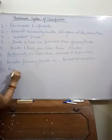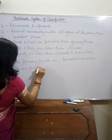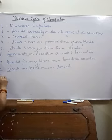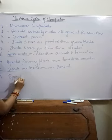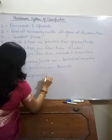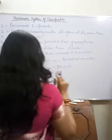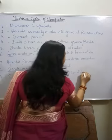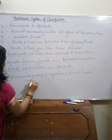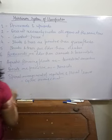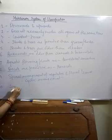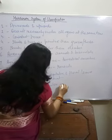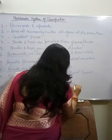The eighth principle is dicots are primitive as compared to monocots. The ninth principle is that spiral arrangement of vegetative and floral leaves is primitive compared to cyclic arrangement. The tenth principle is simple leaves are primitive as compared to compound leaves.